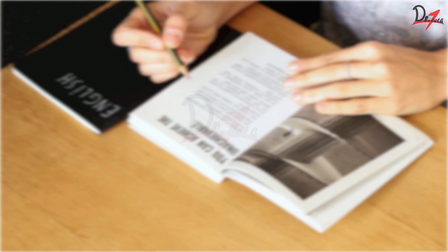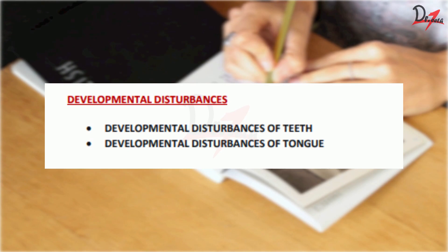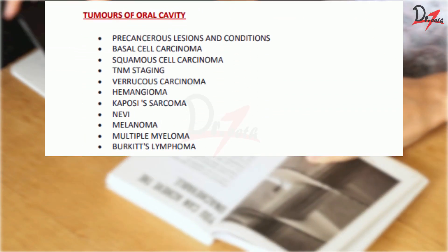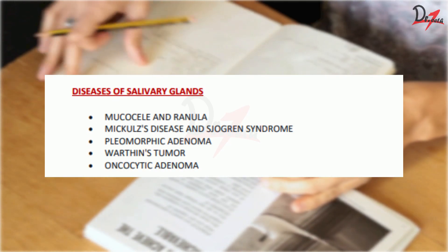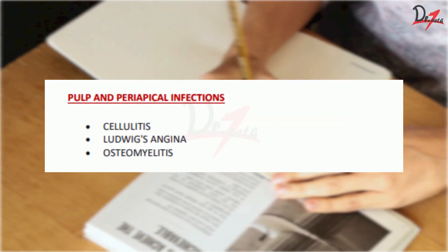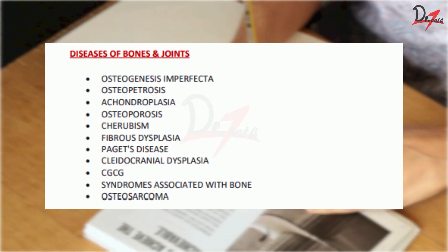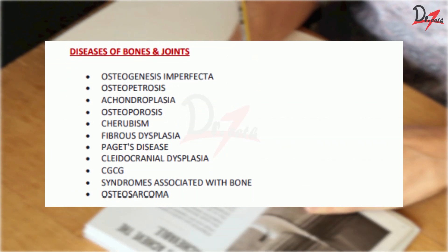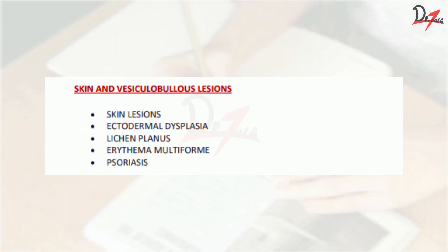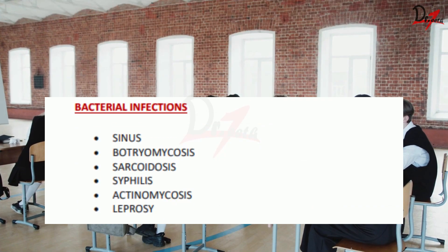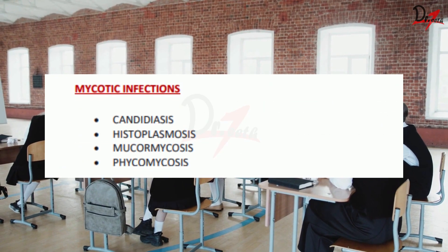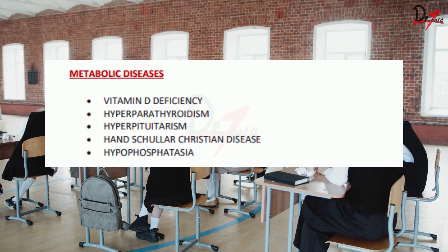In these two subjects, you can cover topics like developmental disturbances, tumours of oral cavity, diseases of salivary glands, dental caries, pulp and periapical infections, diseases of bones and joints, diseases of nerves and muscles, skin and vesiculobullous lesions, bacterial infections, viral infections, mycotic infections, metabolic diseases, and diseases of blood.